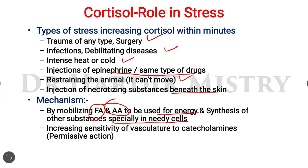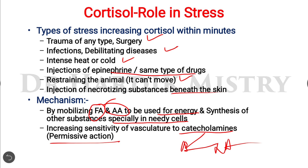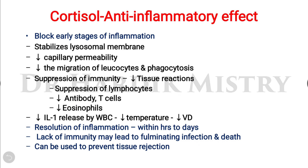Cortisol also increases the sensitivity of the vasculature to catecholamines — that is, adrenaline and noradrenaline — increasing the sensitivity of blood vessels to these substances. This is known as a permissive action.